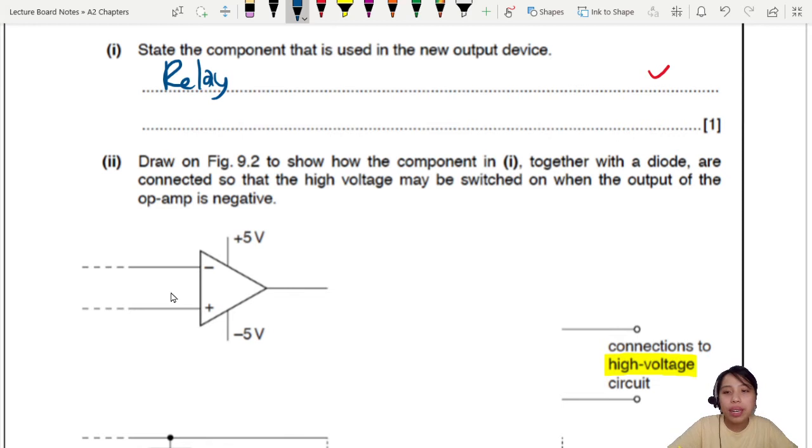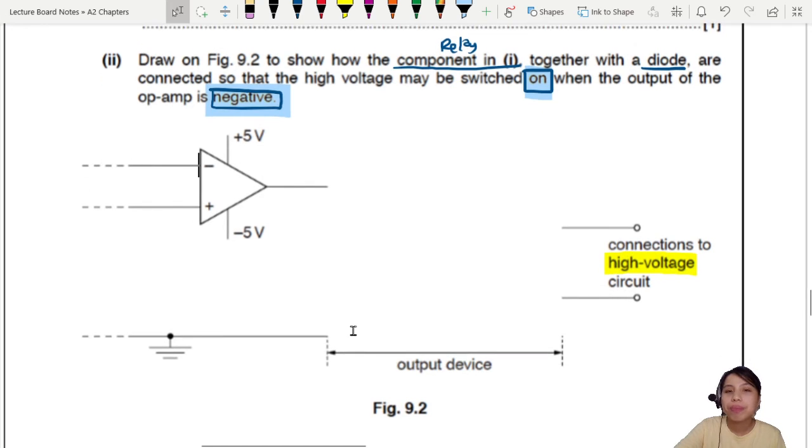And how do we draw this? Show how the components. So this will be our relay. We need to draw a relay together with a diode. Are connected so that high voltage may be switched on when output is negative. So on when negative. We'll keep that in mind. On negative. Let's first draw the relay first. How to draw relay output for this part. Let's do this. First we need a high voltage circuit. So I'm just going to put a switch here.